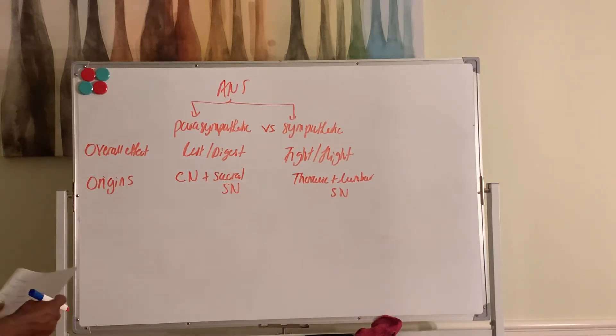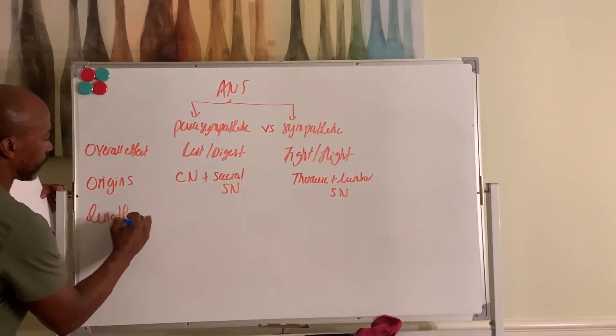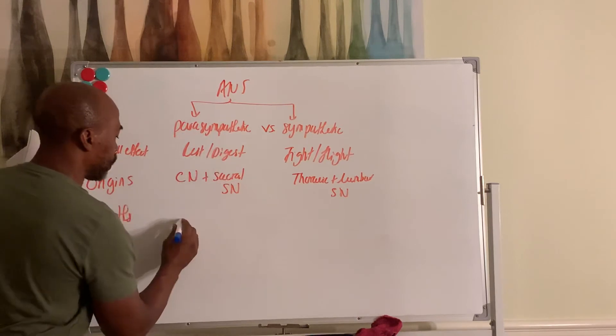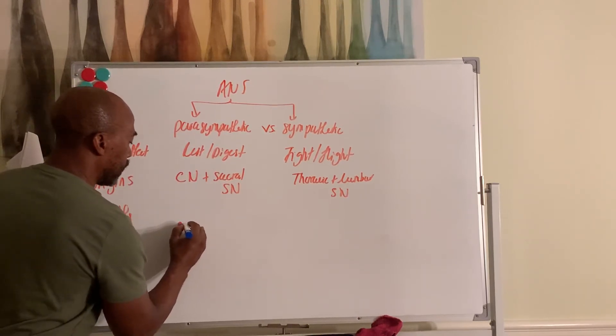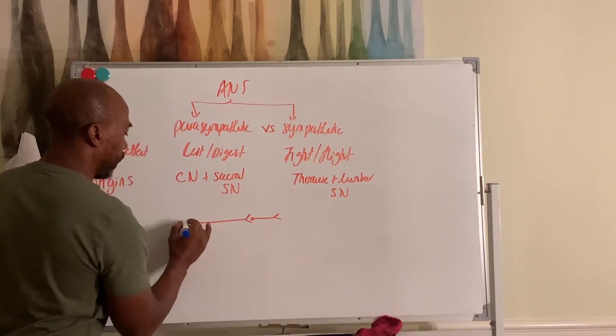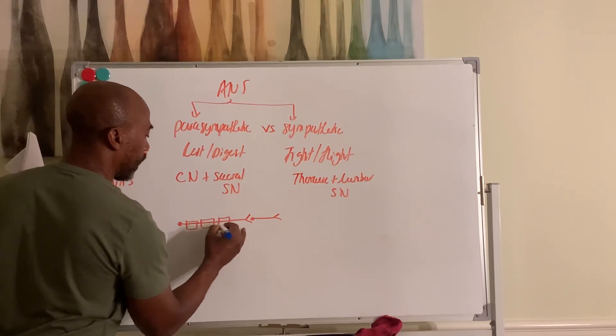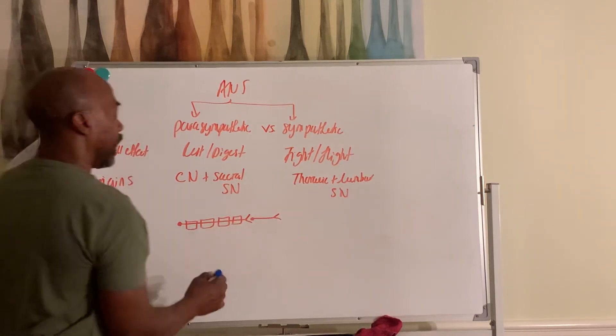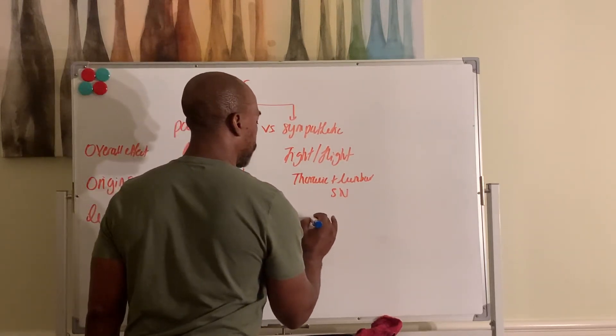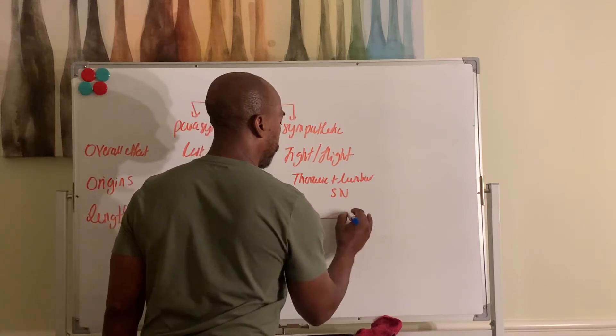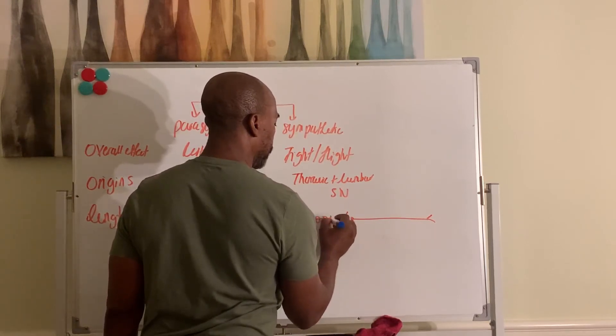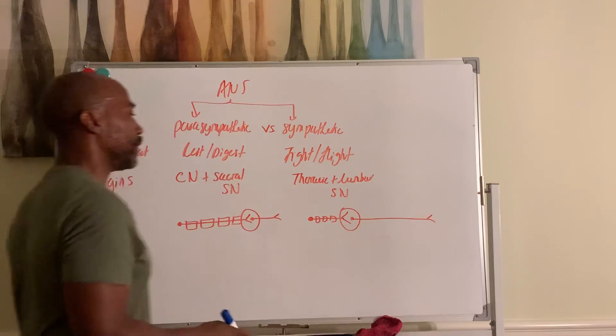Length of fibers. Here, again, they both use two neuron pathways. So in the para division, the first neuron is long and the second one is short. So in para, you have a long pre and a short post. Of course, this is your autonomic ganglia there. And over here, for the sympathetic division, you have a short pre and a long post.